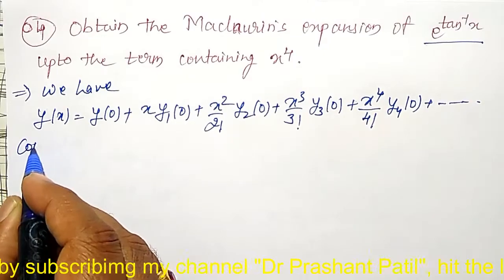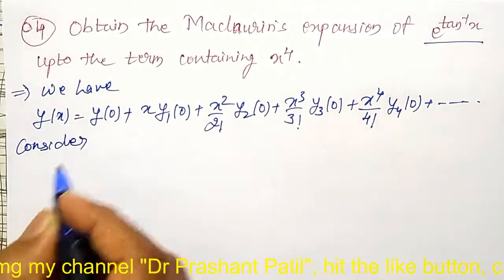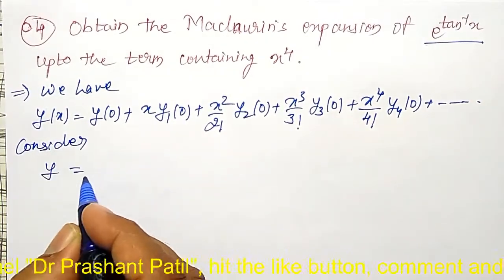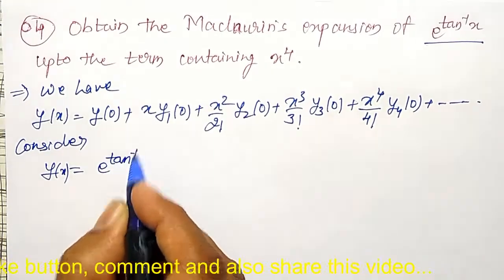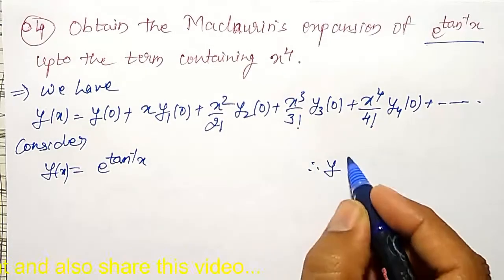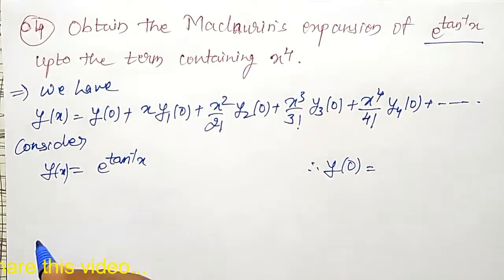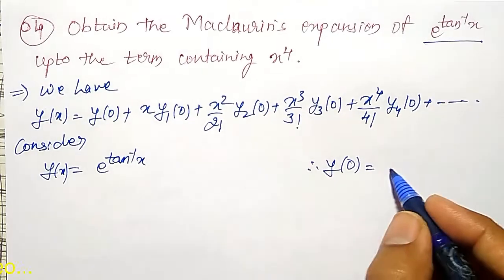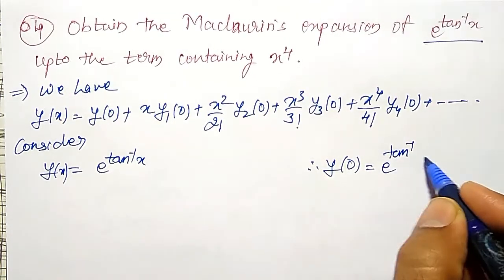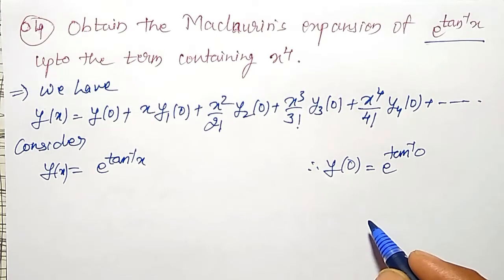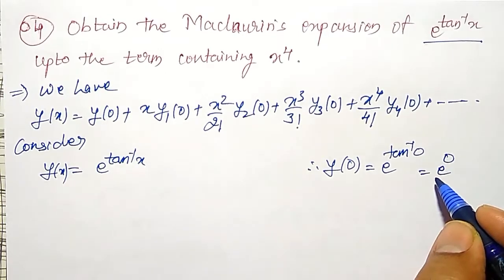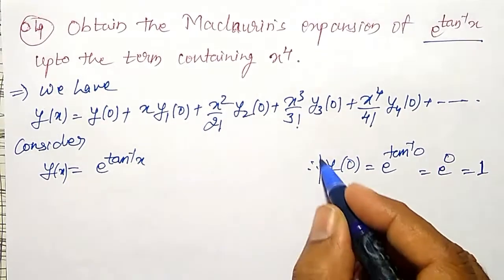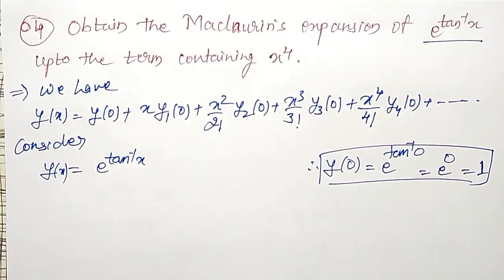Consider y = y(x) = e to the power tan inverse of x. Therefore y(0) = e to the power tan inverse of 0. Now tan inverse of 0 is 0, so e to the power 0 is 1. This is my y at 0.